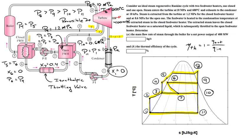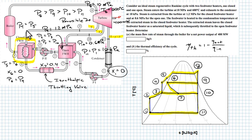Let's do an energy balance around the closed feedwater heater. Drawing a box around it — it's adiabatic, there's no heat or work crossing it. All we have is enthalpy flowing in from stream 9 and leaving at 6, flowing in from stream 4 and leaving at 5. The amount of enthalpy flowing in through 9 and 4 has to equal the amount leaving at 5 and 6.